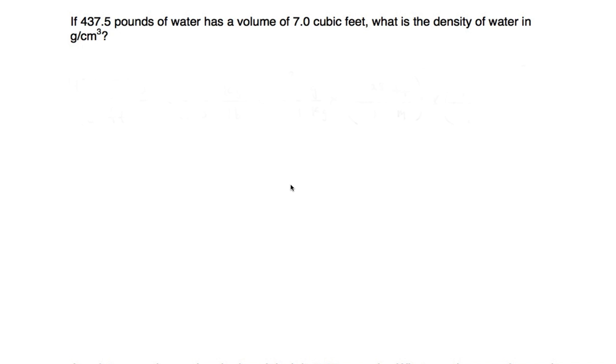If 437.5 pounds of water has a volume of 7.0 cubic feet, what's the density in grams per centimeter cubed? Alright, so we want the units grams per centimeter cubed, that's what we want to end up with.